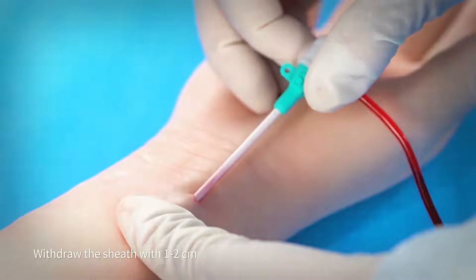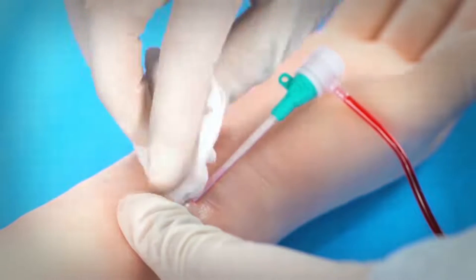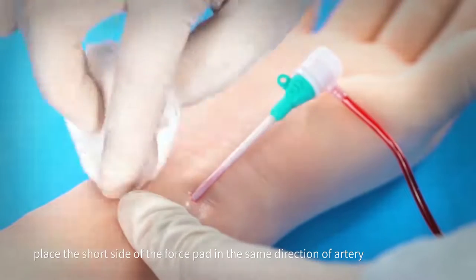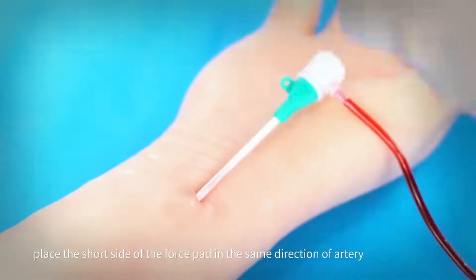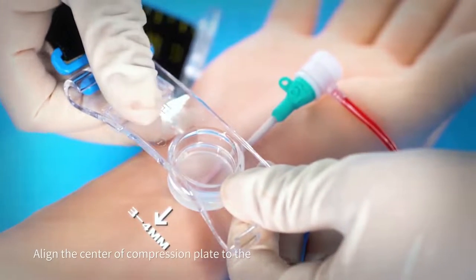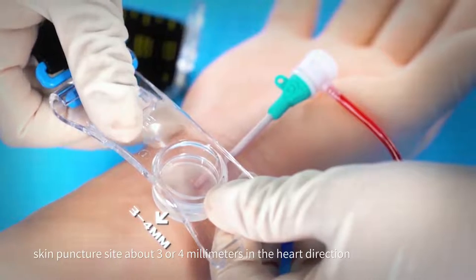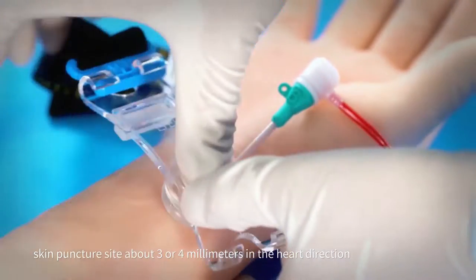Withdraw the sheath one to two centimeters. Place the short side of the force pad in the same direction as the artery. Align the center of the compression plate to the skin puncture site, about three or four millimeters in the heart direction.